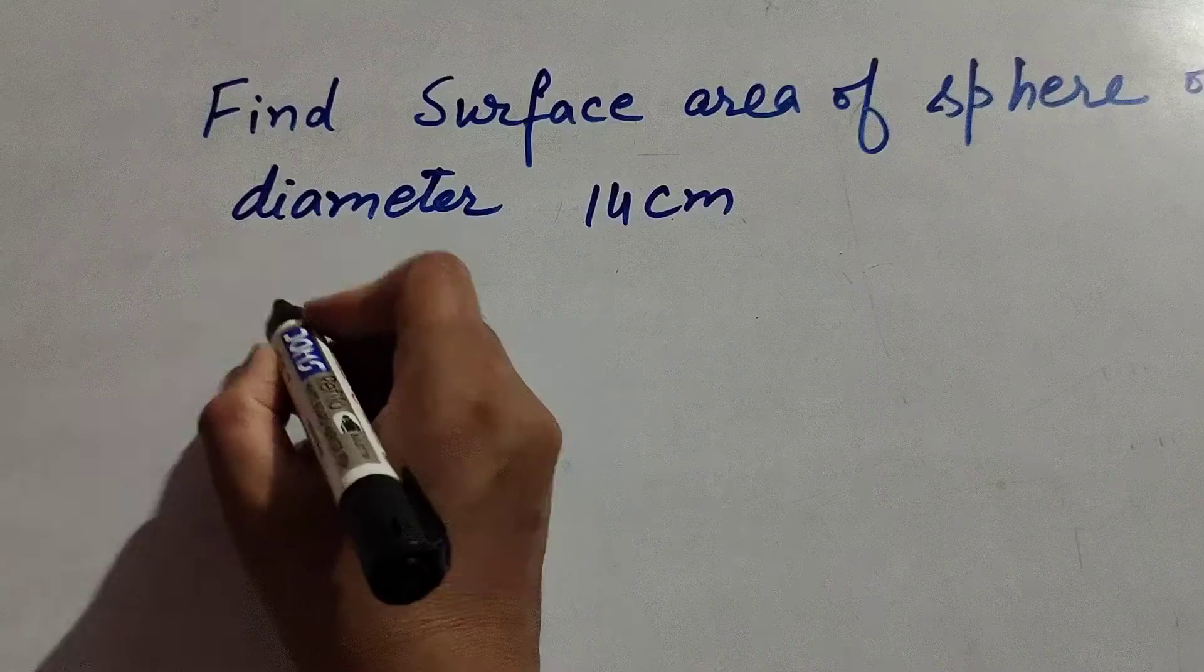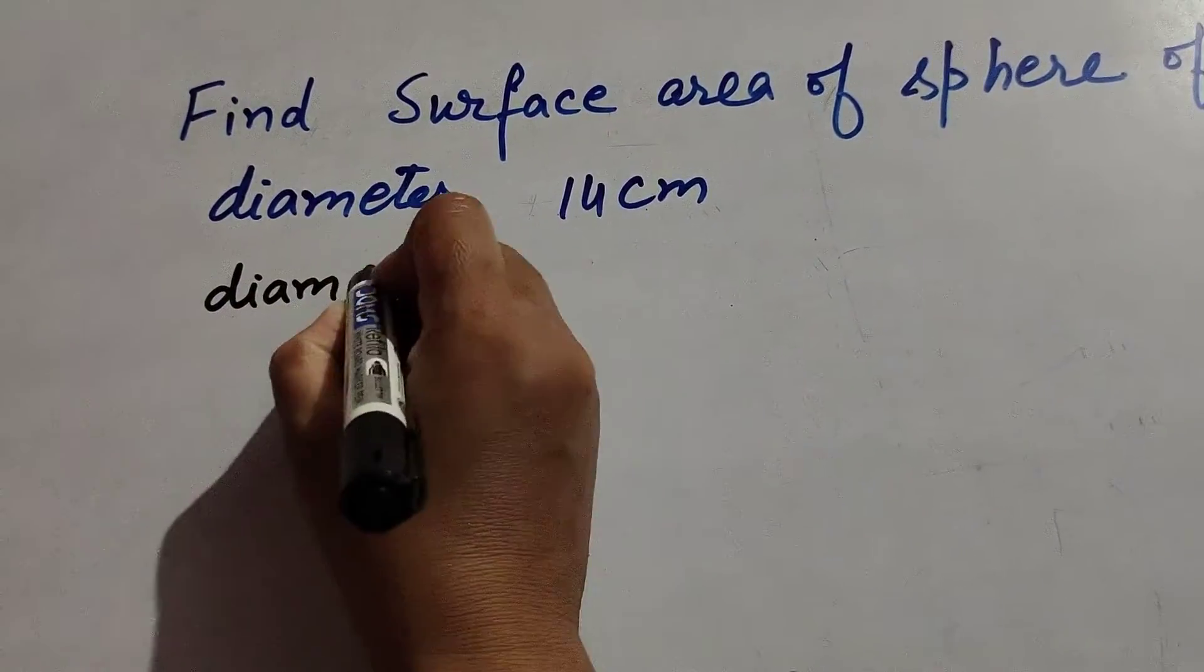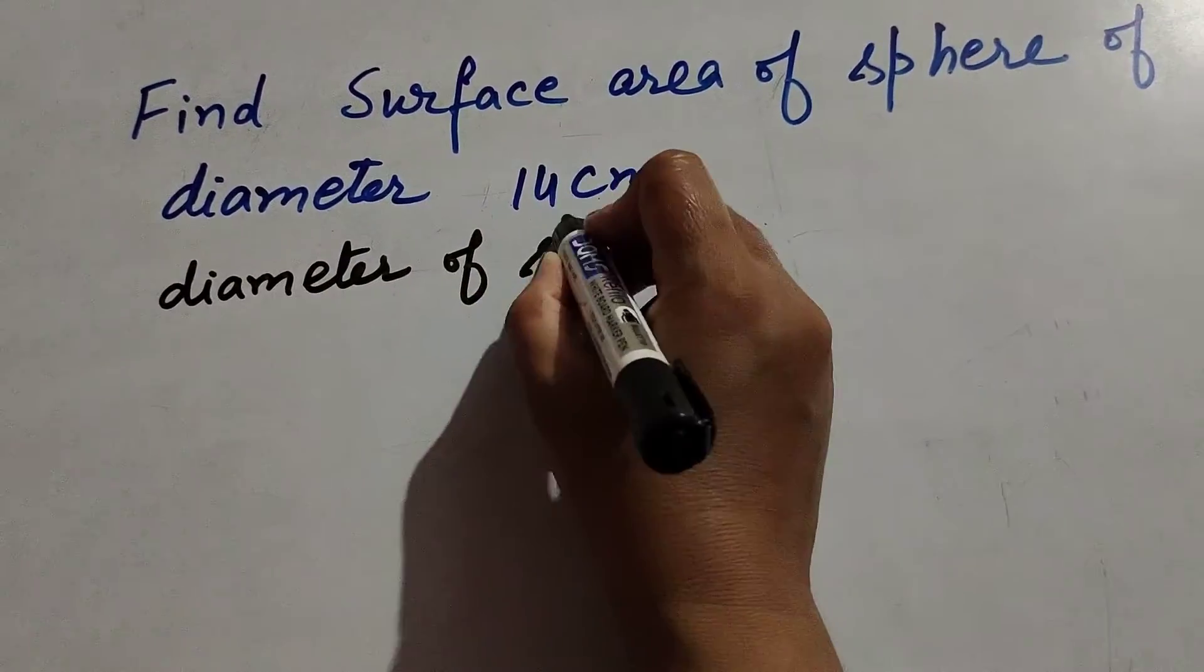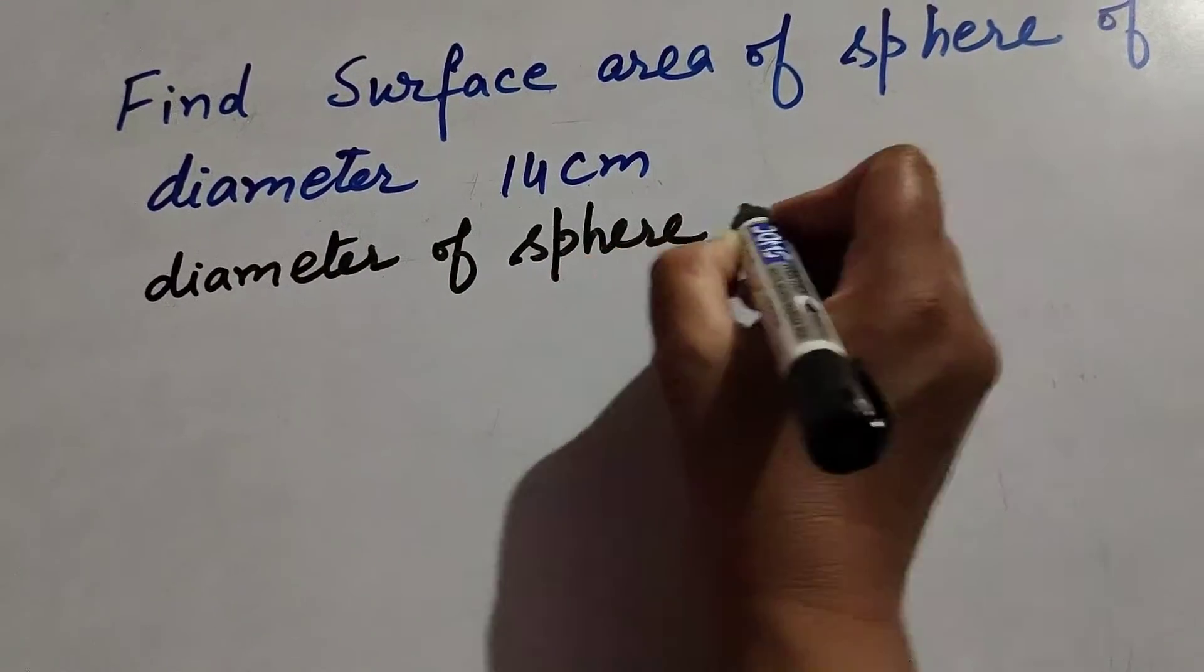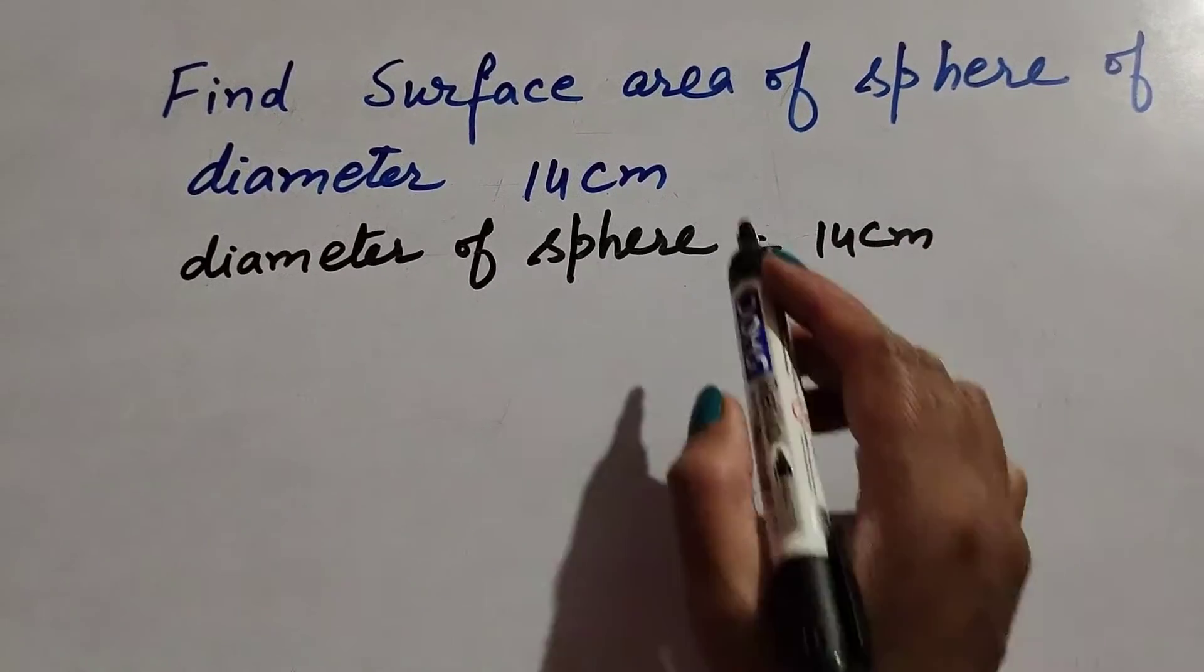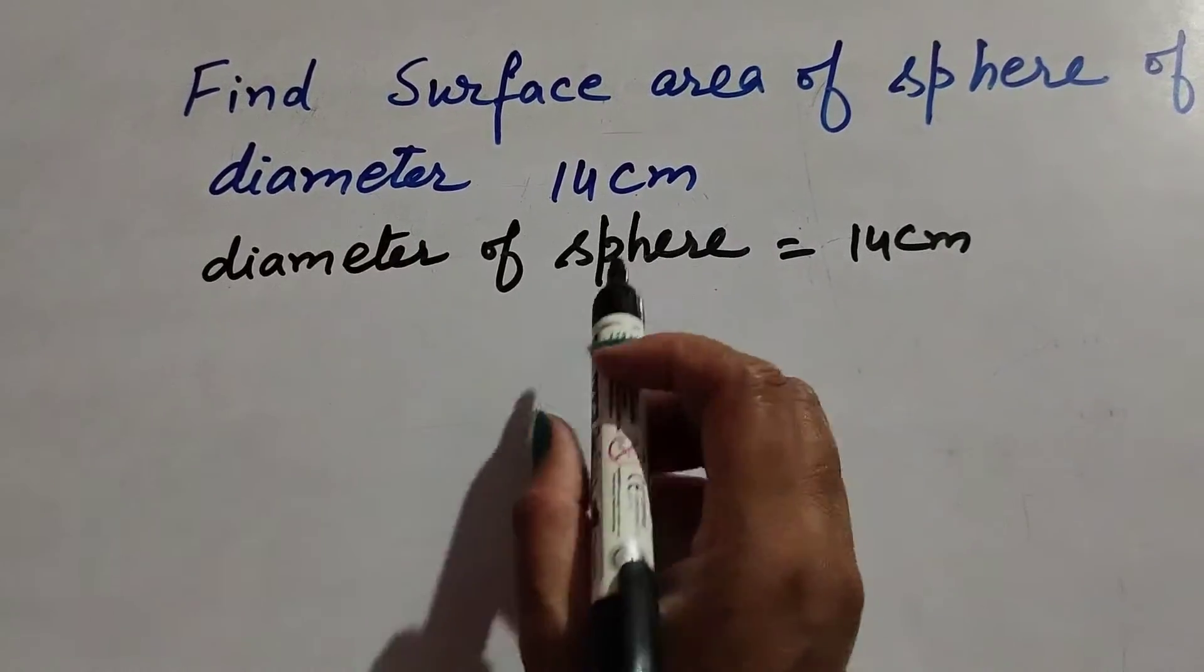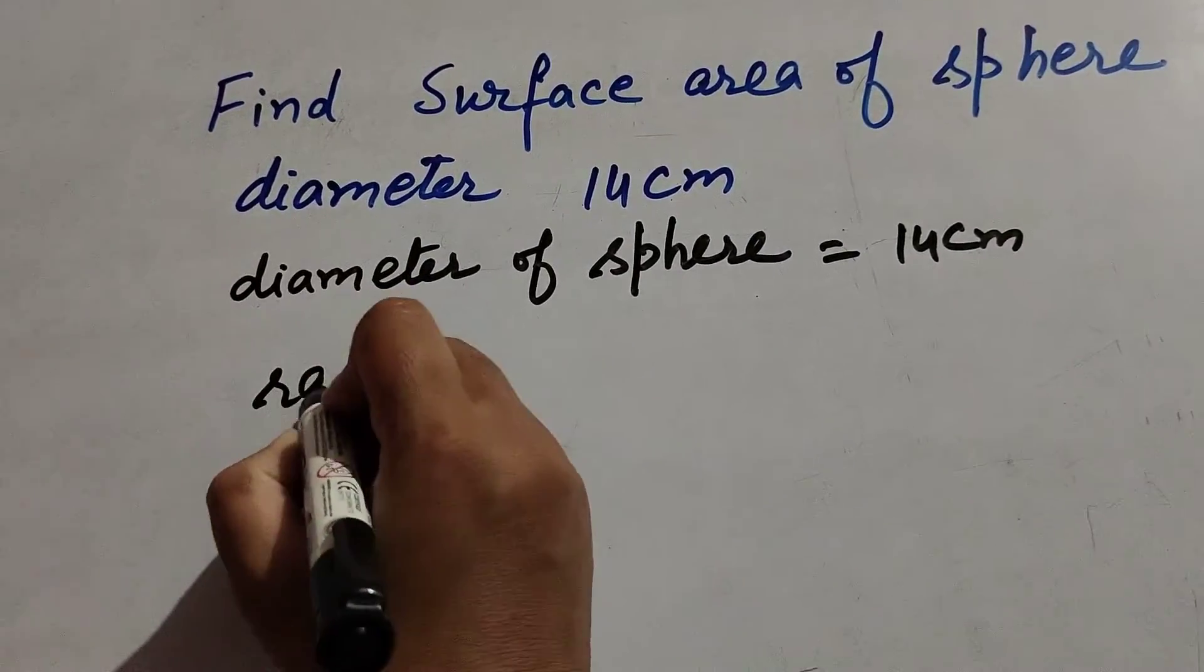Given thing is diameter of sphere, it is equal to 14 centimeter. So we find surface area of sphere. So we need to find its radius. So radius of sphere...